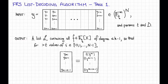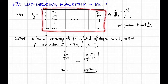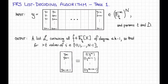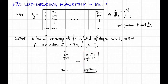Then what the algorithm is supposed to output — it's a list decoding algorithm — so it should output a list L that contains all polynomials F over F_q of degree at most K minus 1, so that for strictly greater than T values of i, the i-th symbol of the received word — the little vector Y_{Mi} through Y_{Mi+M-1} — should agree with the i-th symbol of the folded Reed-Solomon codeword that arises from F. So that would be F of gamma to the Mi, F of gamma to the Mi+1, and so on down to F of gamma to the Mi+M-1. T is the parameter we put into the algorithm, and we're going to choose it later to get the value of P claimed in the theorem.